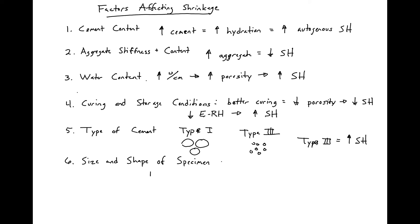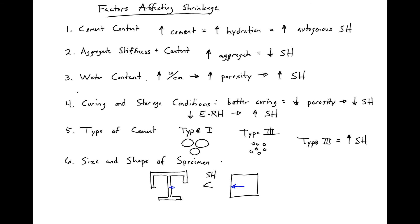Finally, the size and shape of the specimen is also going to affect shrinkage. This affects the distance that water needs to travel to leave the specimen. If we have a thin specimen with a large surface area compared to its volume, the water doesn't have as much distance to travel compared to a specimen with a large volume and small surface area. So shrinkage is going to be larger in the specimen with the larger volume.